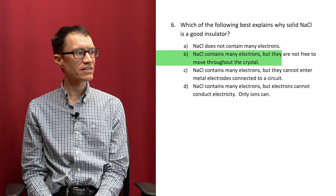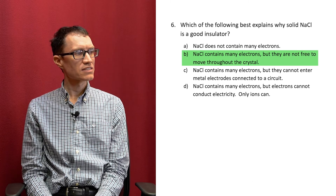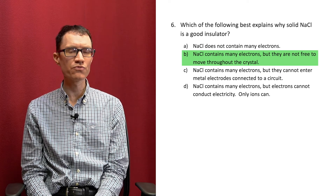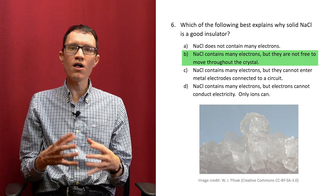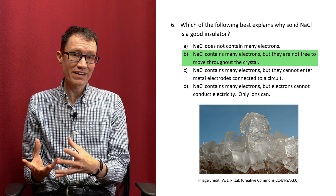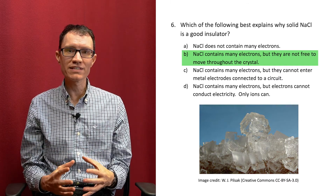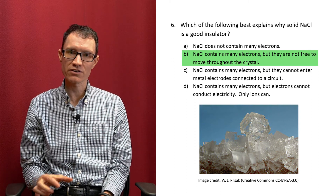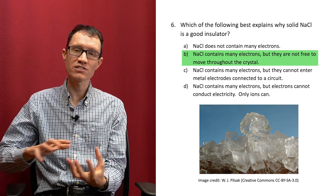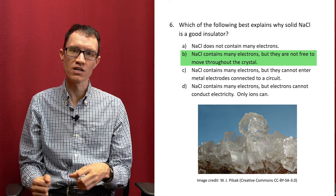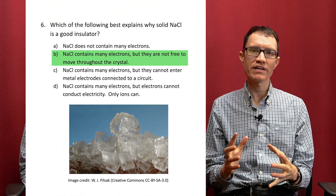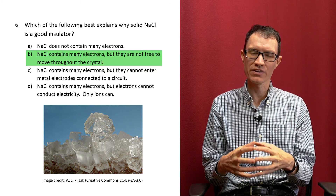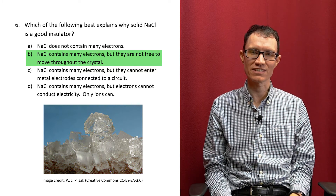The correct answer is B — sodium chloride contains many electrons, but they're not free to move throughout the crystal. All matter contains a lot of electrons. Only in substances like metals or doped semiconductors is it easy for those electrons to move throughout the bulk of the crystal. Sodium chloride is one of those materials where the electrons tend to be very tightly bound. It's a very poor conductor of electricity.